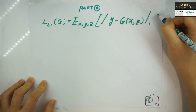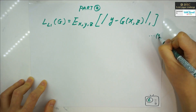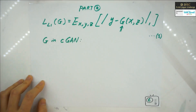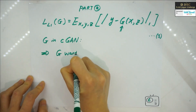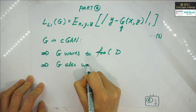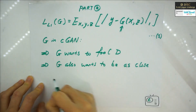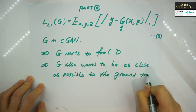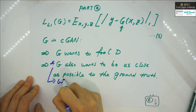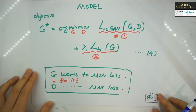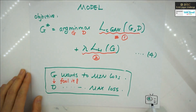In part two, the L1 loss function: why do we need L1? The generator in this model has two goals — first, G wants to fool the discriminator, and second, G wants to be as close as possible to the ground truth. That second goal is why we include the L1 loss function. This gives you a good understanding of the objective function overall.